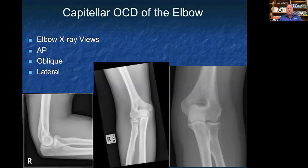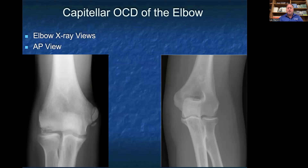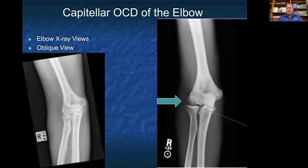The last one is a capitellar OCD of the elbow. Typically we get three elbow views for x-rays of the elbow: an AP view, an oblique view, and a lateral view. The AP view is on the far right, the oblique view is in the middle, and the lateral view of the elbow is on the far left. On a capitellar OCD, you're going to see the capitellum on the distal aspect of the humerus, at the radiocapitellar joint opposite the radial head. On the right you have a normal AP view, and on the left you can see that lucency on the capitellum consistent with an OCD. On the oblique view, the left x-ray shows a normal radiocapitellar joint, while on the right the bluish-green arrow points to the irregularity of the capitellum and the OCD.